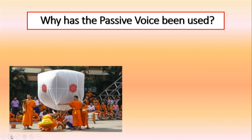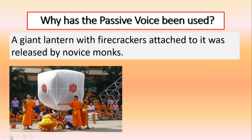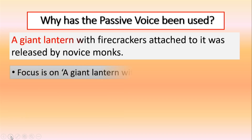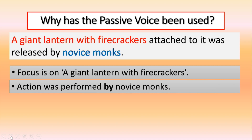Let's study another example from Winsley's travel blog: A giant lantern with firecrackers attached to it was released by novice monks. What is the focus in this sentence — the lantern or the novice monks? Yes, the focus is the giant lantern with firecrackers, placed at the start of the sentence for emphasis, and not the novice monks. Do we know who performed the action of releasing the giant lantern? Yes, the action of releasing was performed by novice monks. Note that the preposition by is used before the novice monks, specifying the ones who did the action of releasing.